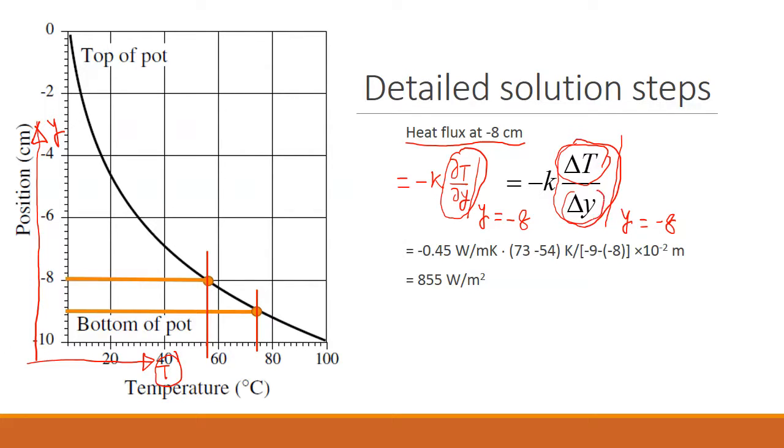So to do this we take these finite changes, so we pick two points, delta y. So here we have y equal to minus 8 is my point where I'm interested, so I pick another point ahead. And so this point is at minus 9. So at minus 8 the temperature is 54.